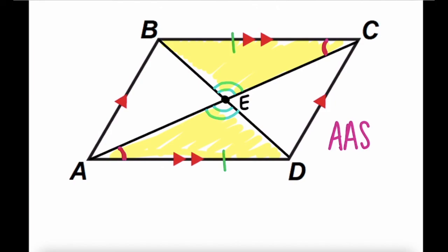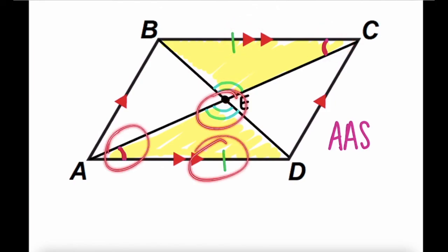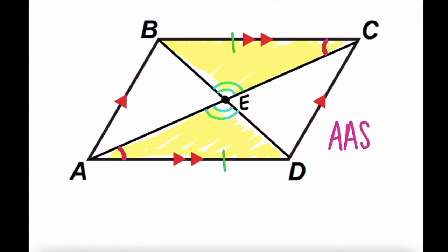We have angle, angle, side — AAS congruence. Because these triangles are congruent, all of their corresponding parts are also congruent. That means the length of DE is congruent to the length of BE, and the length of AE is congruent to the length of CE. Therefore, the diagonals bisect each other.